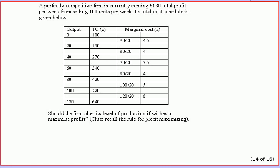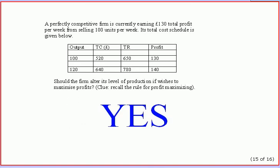At an output of 100 units the marginal cost is £6, but the marginal revenue we could derive from selling extra units is £6.50. Thus there are profitable opportunities by planning to produce and sell a bigger output. To help illustrate this, I've added two new columns to the table showing total revenue and profit. At 100 units total revenue is £650 and supernormal profit is £130, but we can make more profit by expanding output to 120 units, where profits rise to £140 — because we have followed our decision rule.